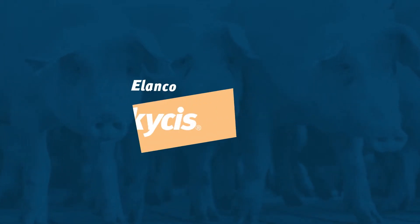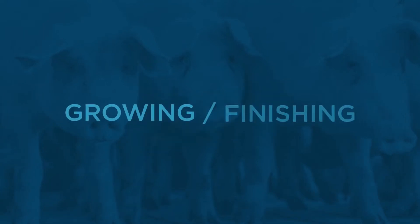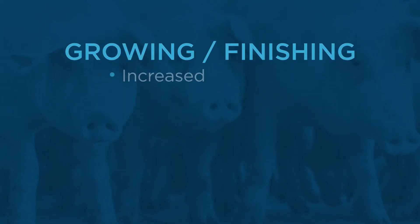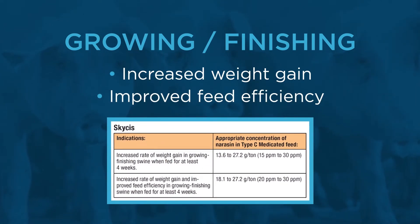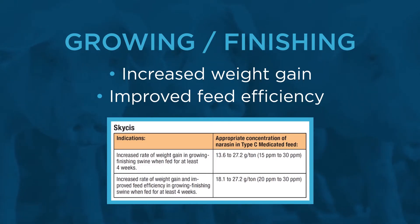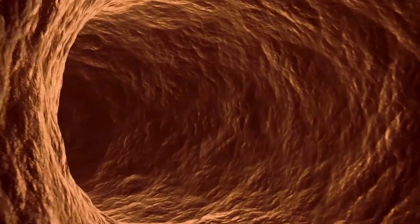When it comes to finishing productivity, SkySys offers flexibility and efficiency, indicated for increased weight gain and improved feed efficiency in growing finishing swine when fed for at least four weeks at 18.1 to 27.2 grams per ton of feed. Elanco SkySys is the only ionophore available to U.S. pork producers. How does SkySys as an ionophore benefit swine production? Let's take a look.